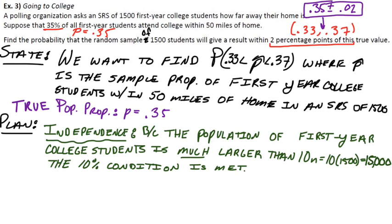What exactly does that do for us? If you remember, that's the one that allows us to use this formula for standard deviation. So the standard deviation of the sampling distribution of P hat would be P, which is 0.35, times 1 minus P over N, and then you take the square root. So the reason we check the independence condition is so we can use this formula for standard deviation, which gives us 0.0123.